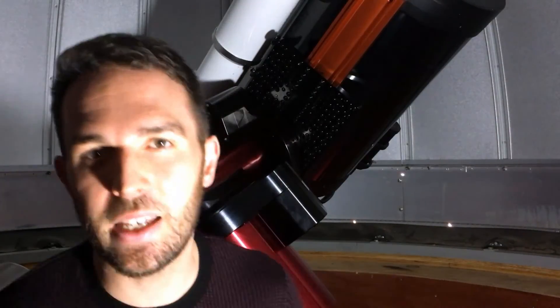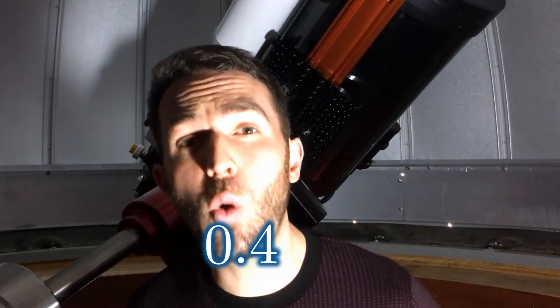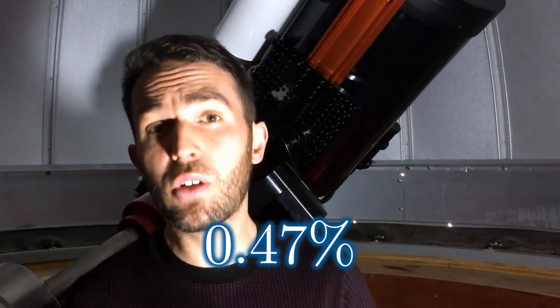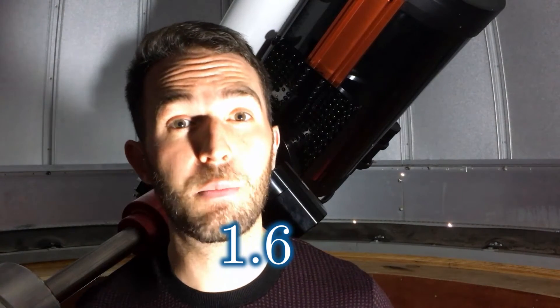The probability of detecting a planet just like our own using the transit method is pretty slim, 0.47 percent. Those odds do go up if we're looking for planets like Earth but around red dwarf stars in their habitable zones, which would be much closer in at 1.6 percent.